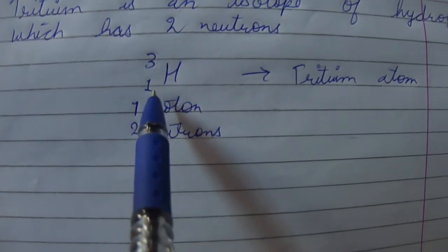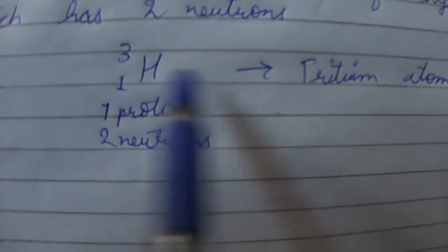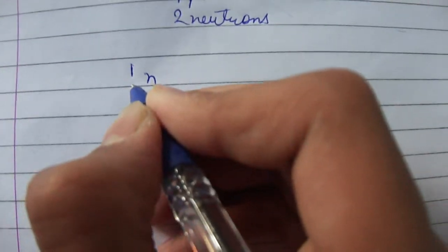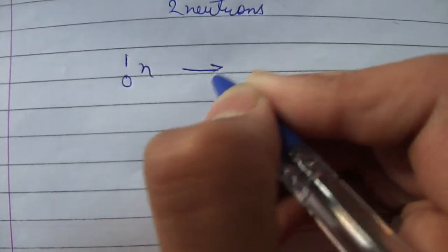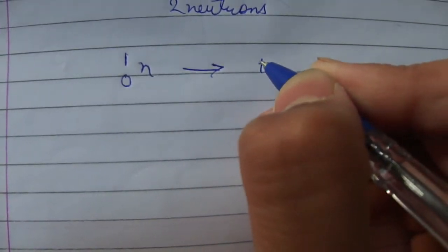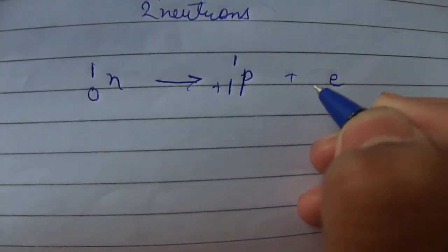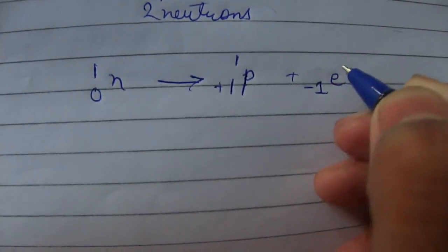Tritium has atomic number one and atomic mass three. In beta emission, one neutron is converted into one proton and one electron. The neutron has mass one and charge zero; it is converted into a proton with charge plus one and mass one, and an electron with charge minus one and mass zero.